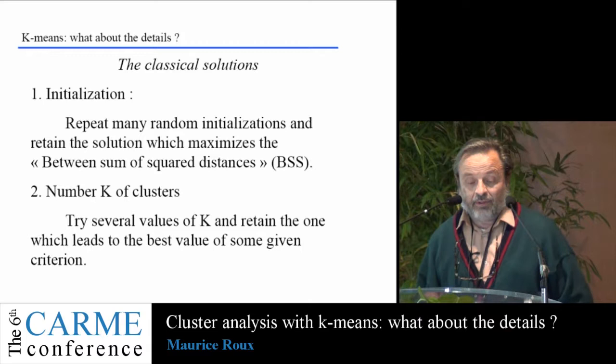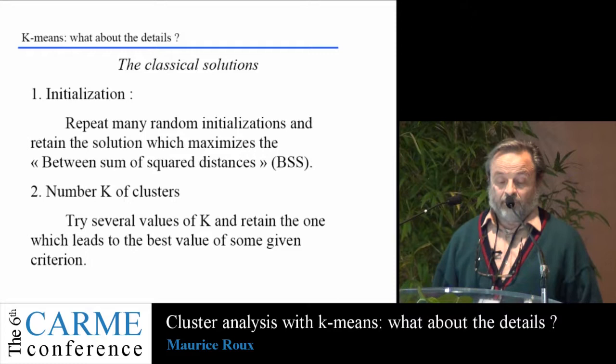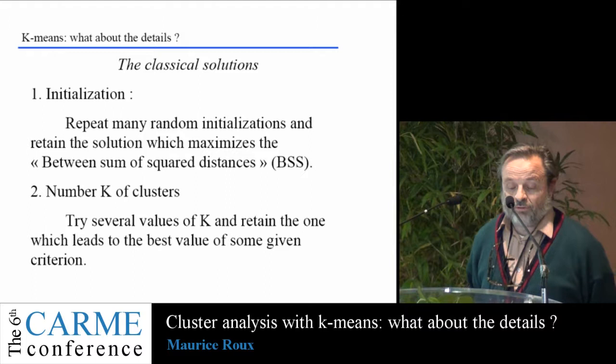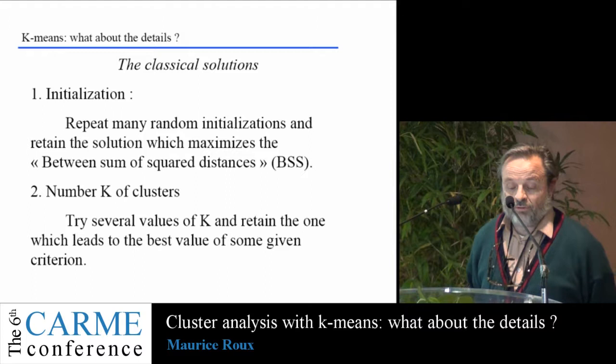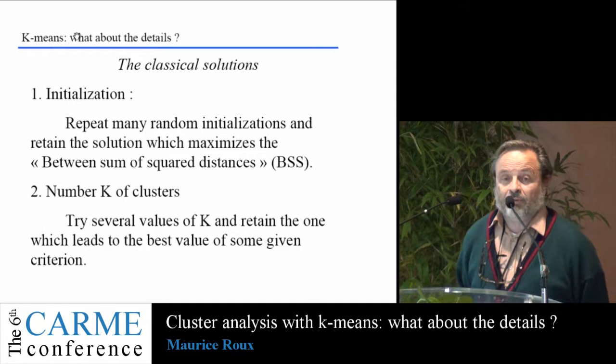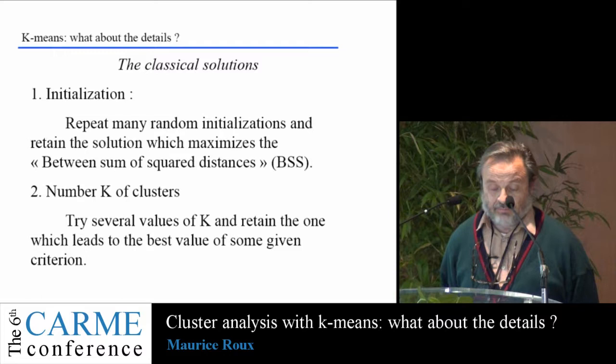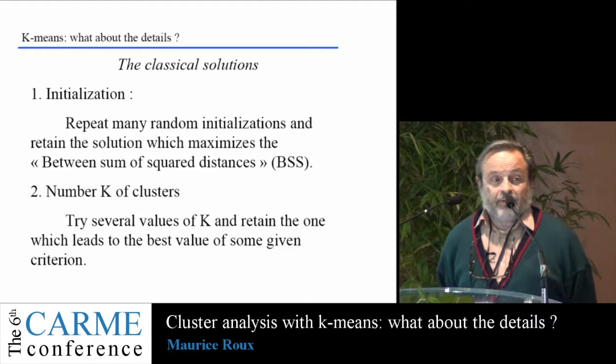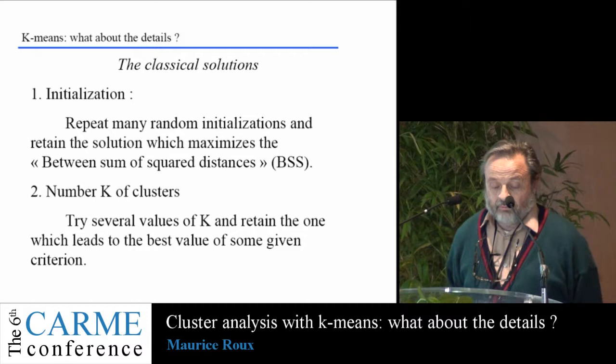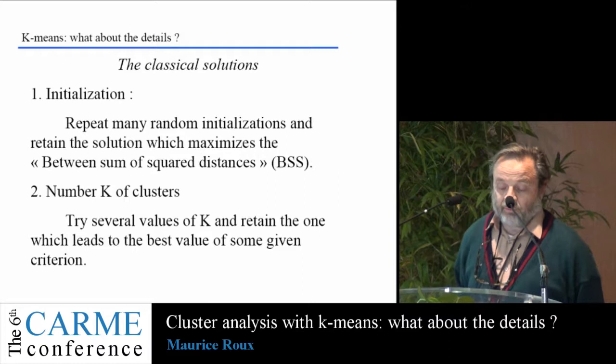The classical solution for the initialization — one of the most used solutions — is to repeat many random restarts and to retain the solution which maximizes the classical between-sum-of-squares distances, which is the quantity optimized by the K-means procedure. For the number of clusters, this is a quite difficult issue. In general, people try several values of K and retain the one which leads to the best value of some given criteria.